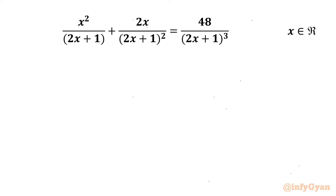Welcome back to Infigr, my dear friends. In today's video we have one very interesting question from Rational Equations. It is x² over (2x+1) plus 2x over (2x+1)² equal to 48 over (2x+1)³. And we are going to calculate real solutions only.